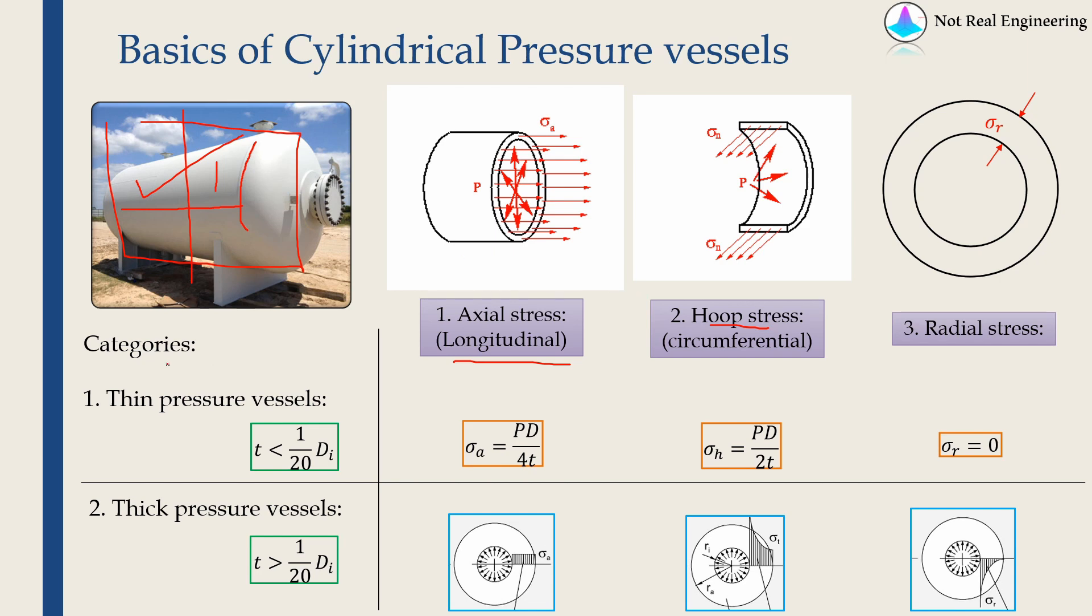And broadly, we categorize pressure vessels into these two categories. One is thin pressure vessels, where the thickness of the pressure vessel is less than diameter by 20. And another category is thick pressure vessels, where the thickness is greater than diameter by 20. The reason to divide pressure vessels into these two categories is,